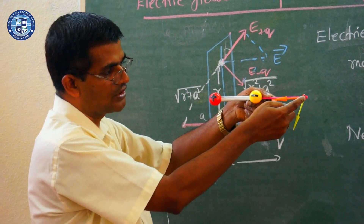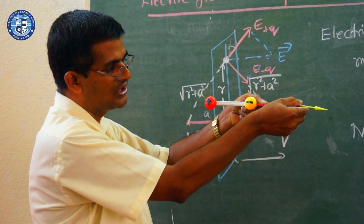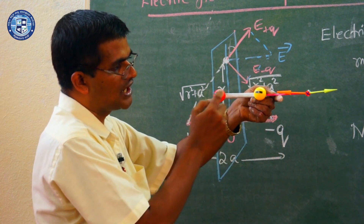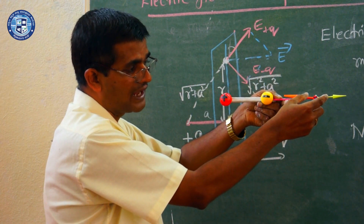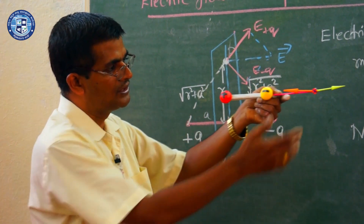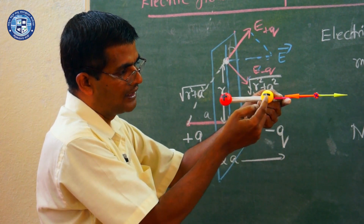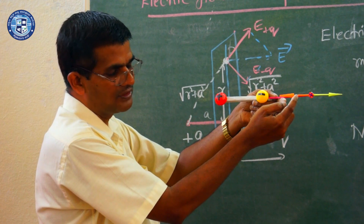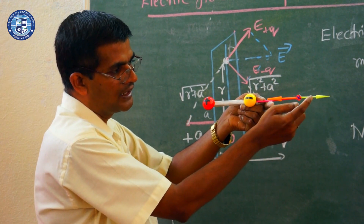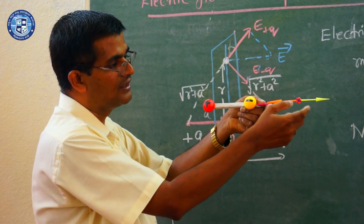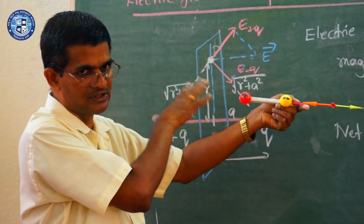Suppose I place a positive charge on the axial line — it is attracted towards the negative charge and gives a direction like this. If it is a negative charge, because of the positive charge, it will experience a repulsive force. We already discussed this electric field on an axial line. The nature of the electric field due to the axial line is such that the test charge is attracted by the negative charge and repelled by the positive charge, giving the total electric field at any point on the axial line.